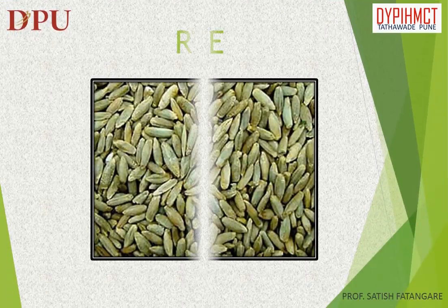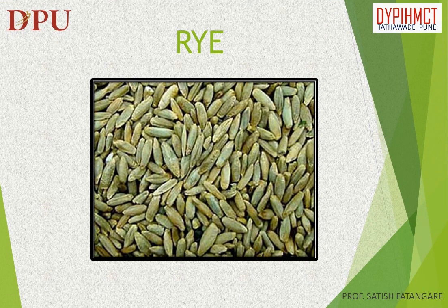In this slide we will discuss about rye. Rye is a grass grown extensively as a grain, a cover crop and a forage crop. It is a member of the wheat tribe and is closely related to barley and wheat. Rye is an excellent source of insoluble fiber.